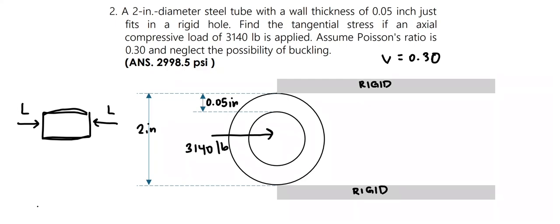Knowing that the steel tube is fixed in a rigid hole, it offers no deformation tangentially. Therefore, there must be a stress to resist the steel from that deformation, which we need to solve. Let's call this the tangential stress.